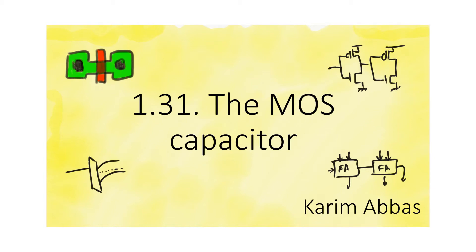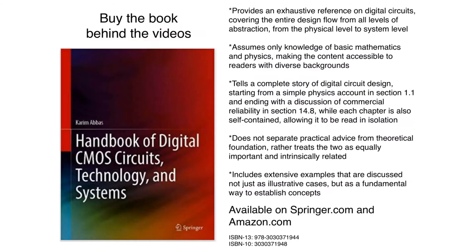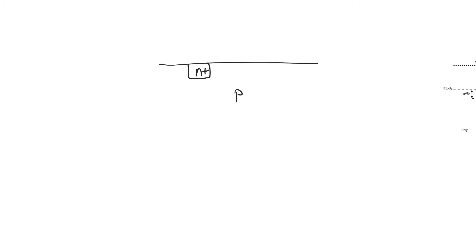We can now start looking at the MOS capacitor, which is the vertical structure upon which the MOSFET is built. The MOSFET is the most commonly used transistor. We have a substrate or body of P-type silicon, two areas with N-plus doping, an area of silicon dioxide which is an insulator, and then a gate that is ostensibly made of metal.